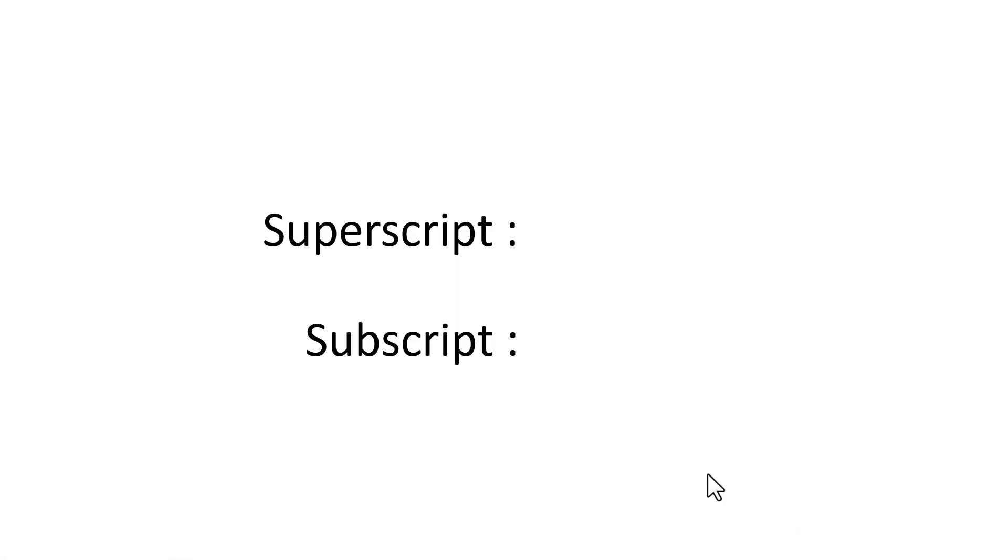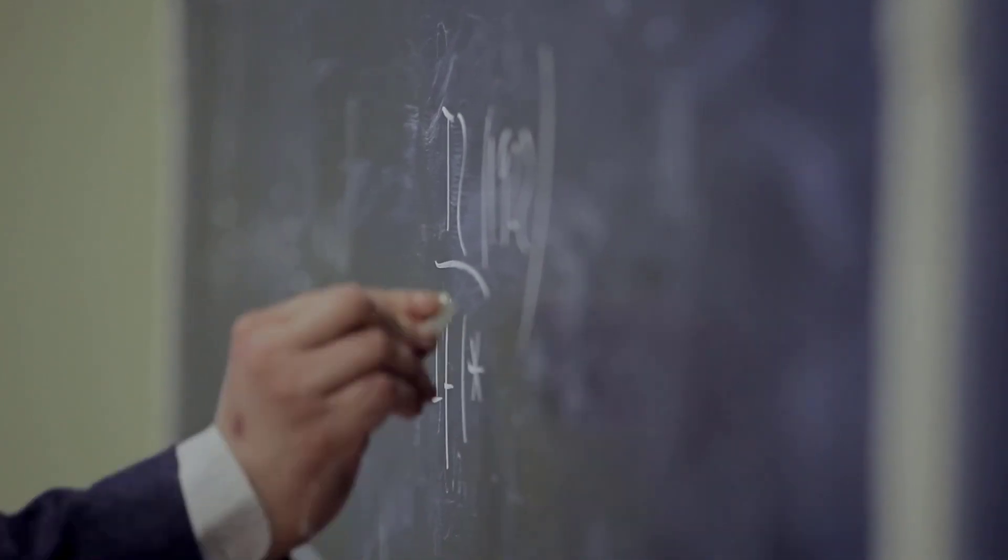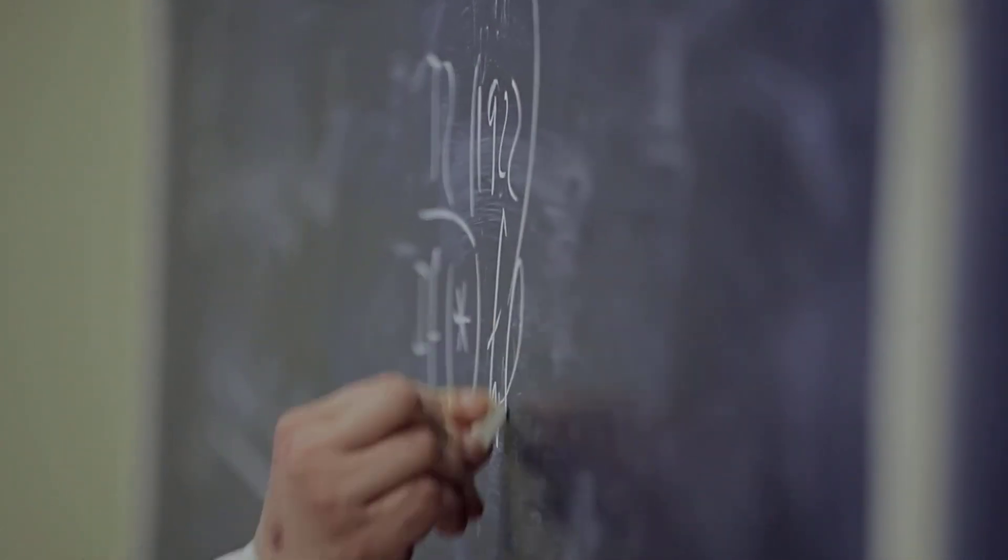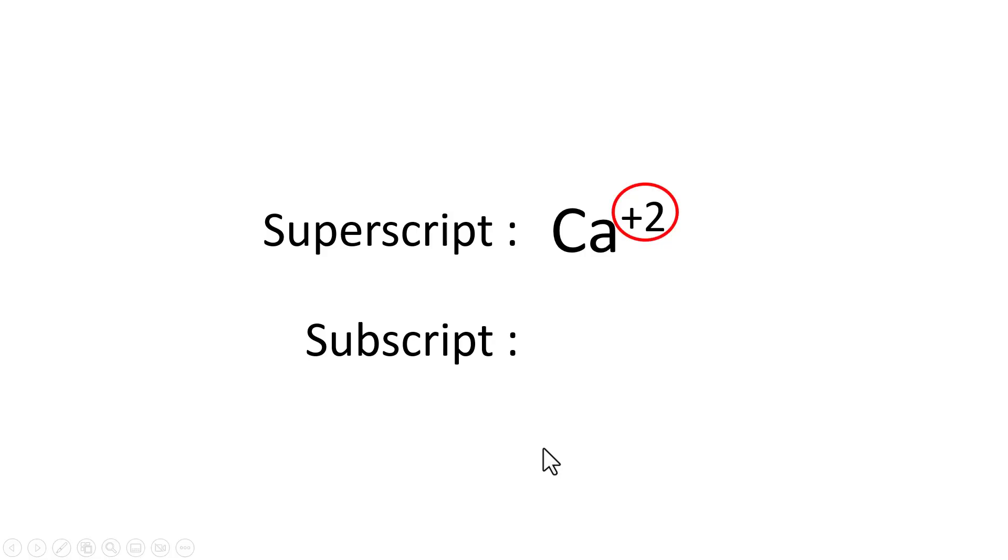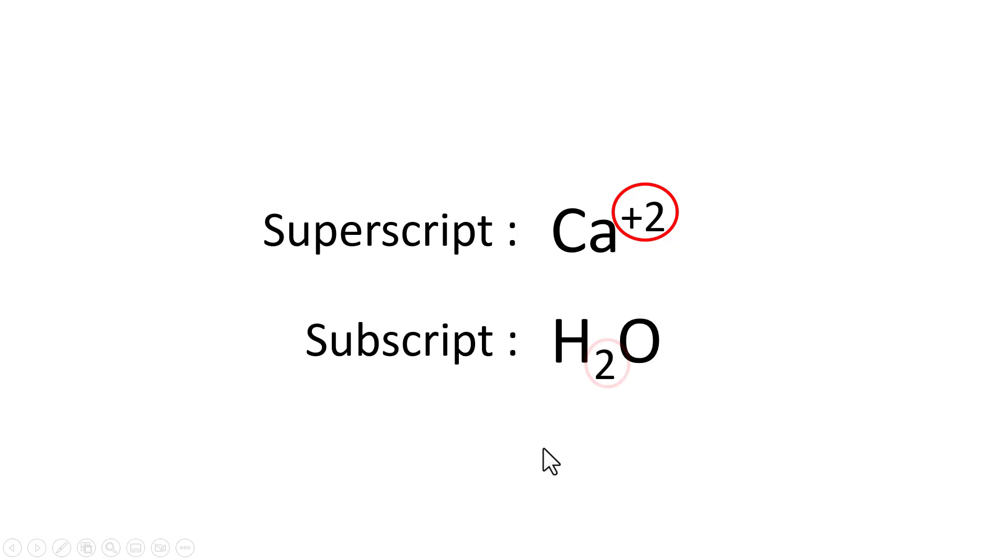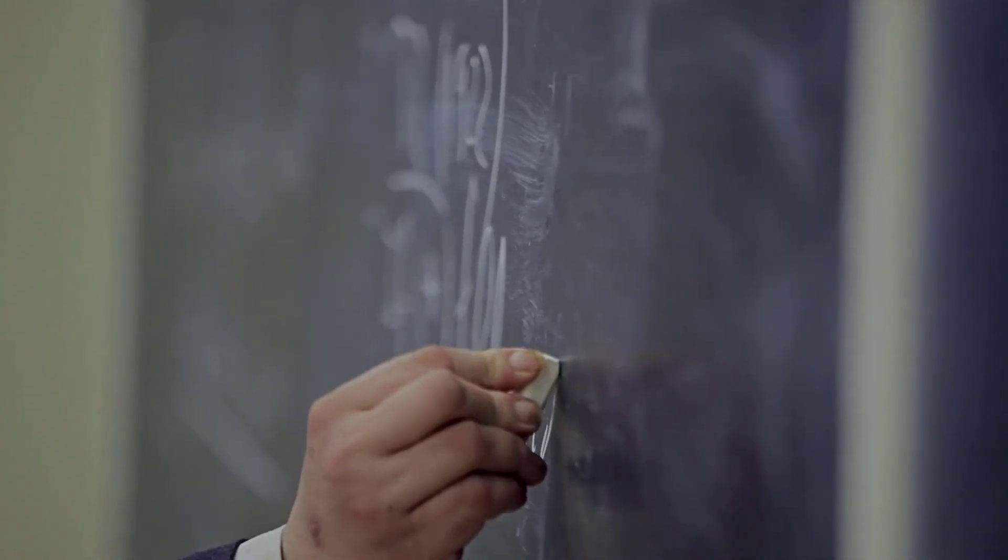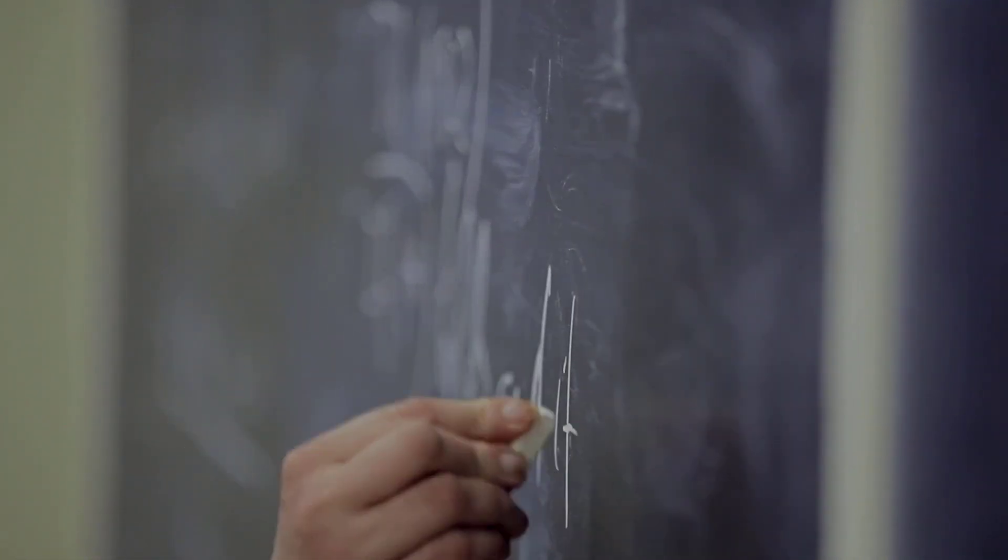A superscript is text or number written slightly above the baseline. As you see here, a superscript is usually used to write math or chemistry formulas. The same way, a subscript is the number or text written slightly below the baseline, like the way you see here. This again is used in writing formulas in maths and chemistry.